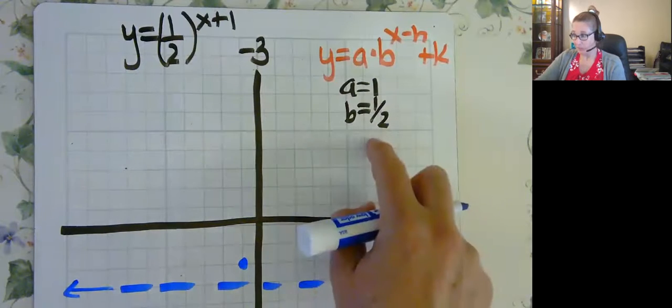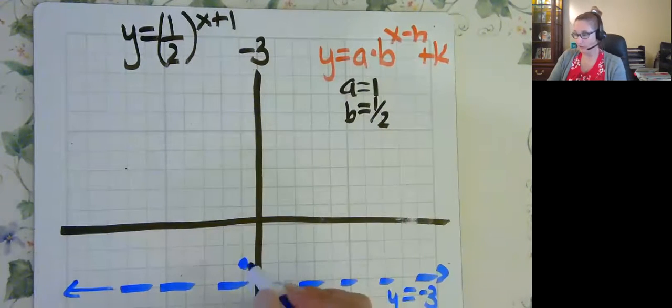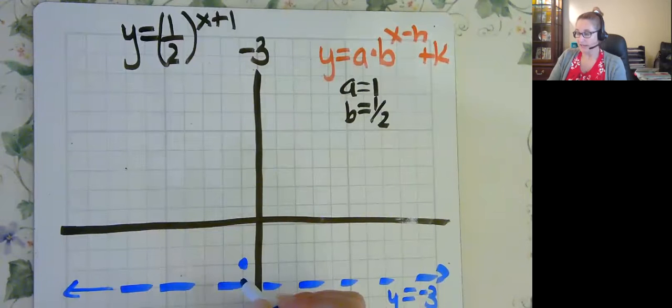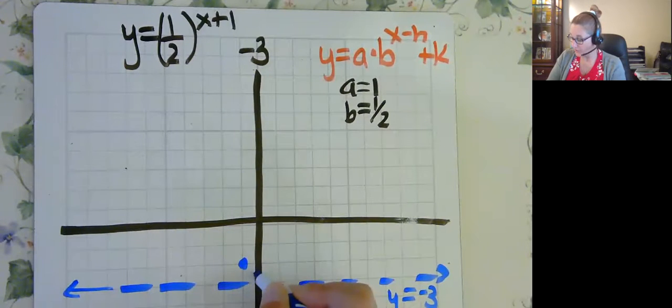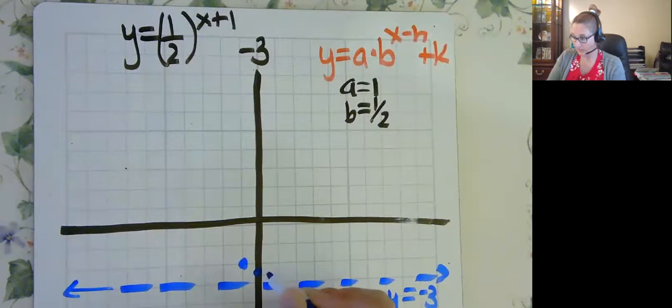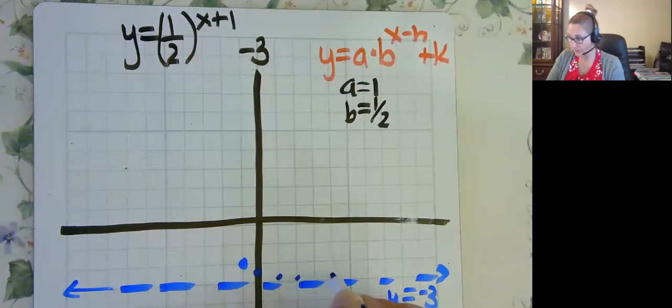And then I am multiplying by 1 half. So if this is 1 high, as I go to the right and I times it by a half, it's going to be half as high. It's going to be 0.5 or a half. And then it's going to be half as high, which would be 0.25 or 1 fourth. And so forth. It's getting half and half and half as high.